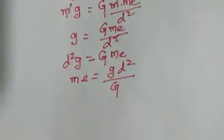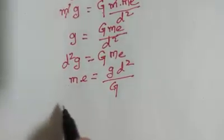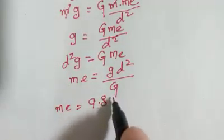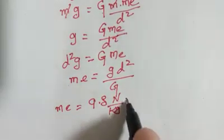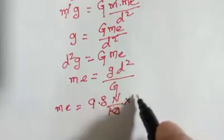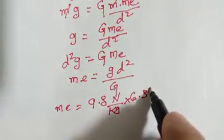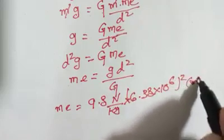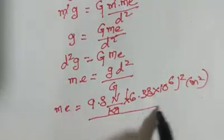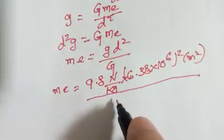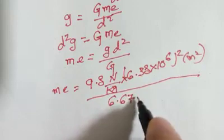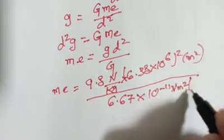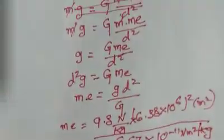Let me plug in these values. We get the mass of Earth Me equals to g, which is 9.8 N per kilogram, multiplied by d squared — the distance from the center of the Earth — 6.38 times 10 to the power 6, whole squared, in meters squared. This is whole divided by the gravitational constant which Henry Cavendish found out: 6.67 multiplied by 10 to the power minus 11 Newton meter squared per kg squared.